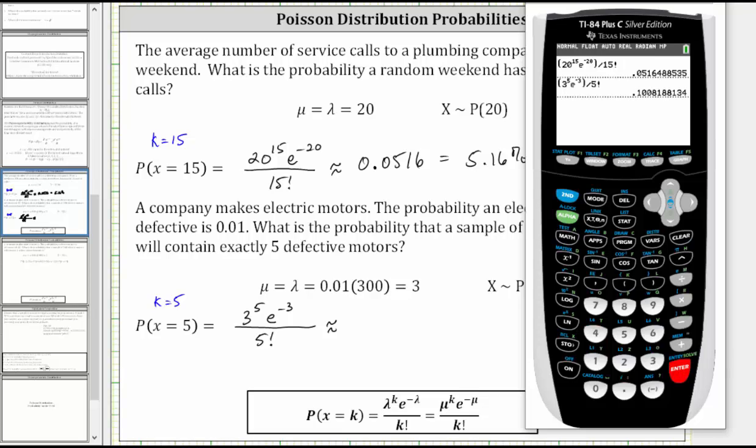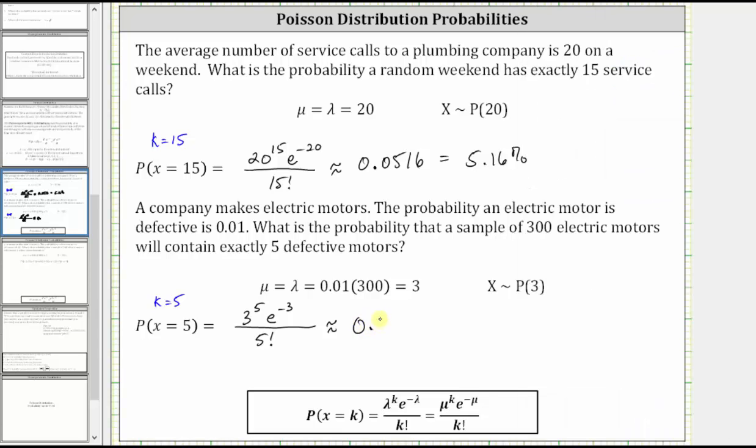Enter. To four decimal places, we have approximately 0.1008, which is equal to 10.08%. I hope you found this helpful.